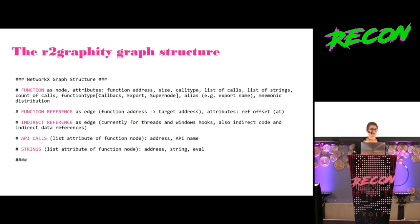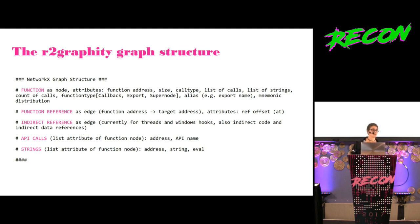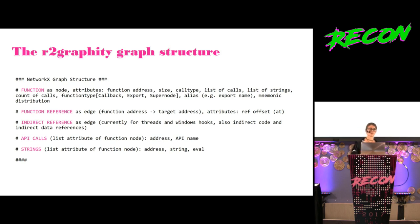So much about the parsing. Finally, the graph structure — I did that slide this morning, just copy-pasted the documentation out of my script. The main idea is: functions as nodes, function references and indirect references as edges, API calls as attributes stored within the node, and strings also stored as lists within the node. I started this project not with the idea that I needed to visualize my graphs, but I created visuals to improve the quality of the graphs. I started with visualizing the structures as dot graphs to see what's happening where and whether my parser had the right output — whether I found all the functions and whether the functions looked like they were supposed to.